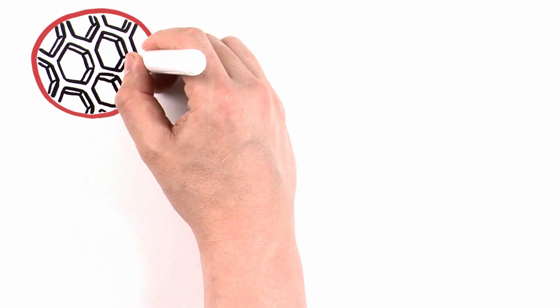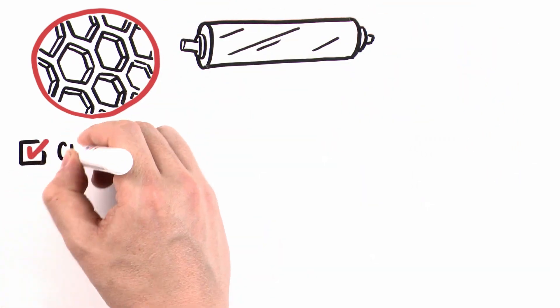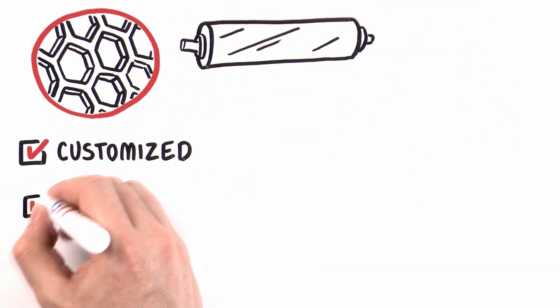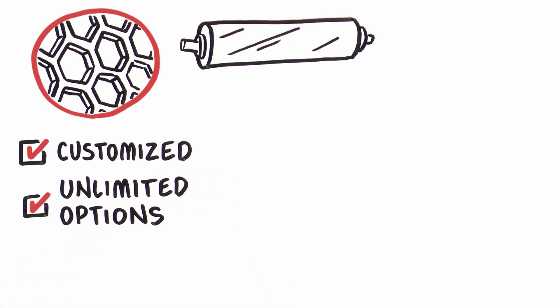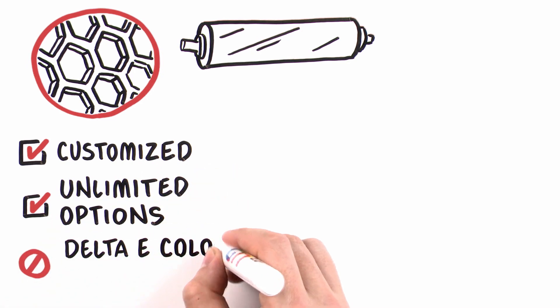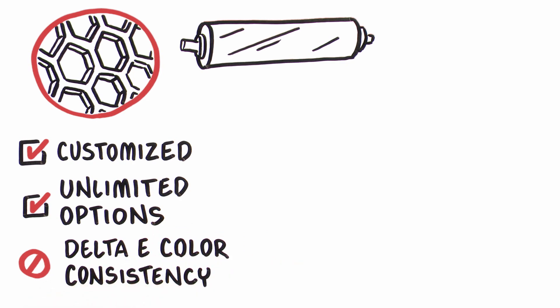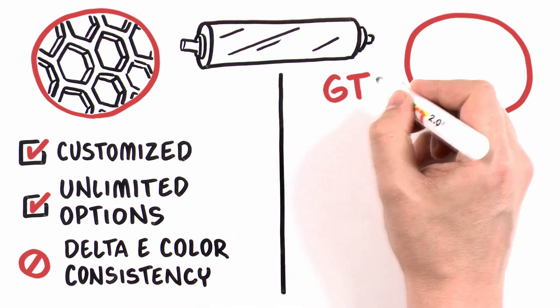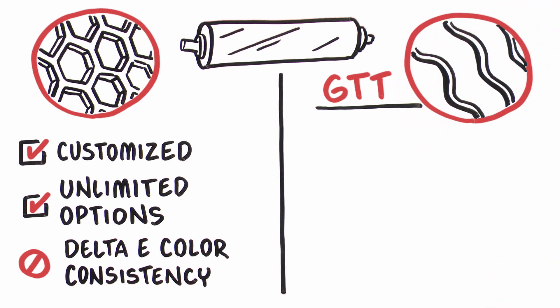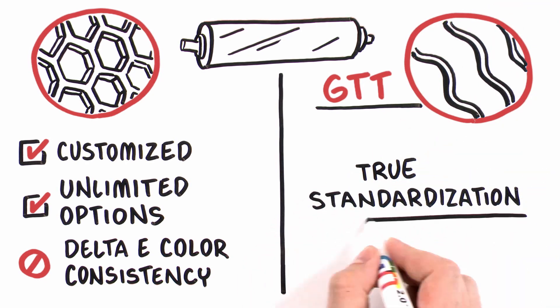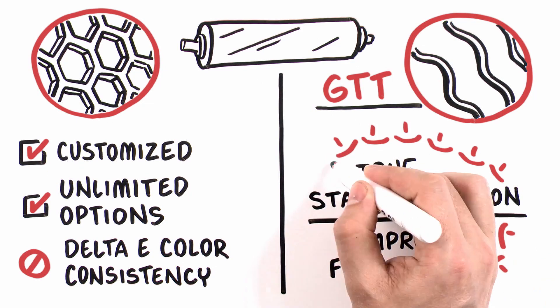Put simply, all cell-based analogs rolls are customized and made to order, resulting in virtually unlimited options for conventional engravings and making analogs to analogs delta-e color consistency almost impossible. However, with the GTT 2.0 engravings from Apex, true standardization with improved flexibility becomes possible.